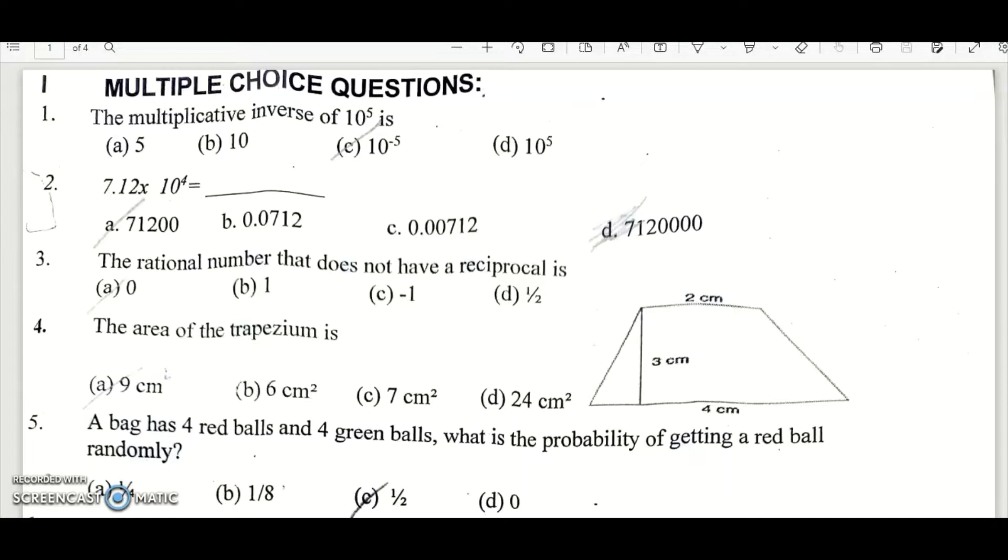Question number 3, the rational number that does not have a reciprocal is, that is option A, 0.